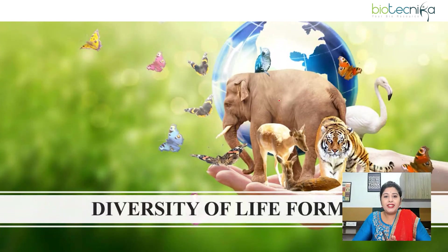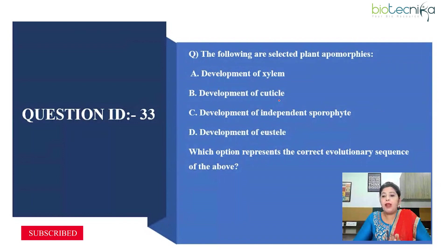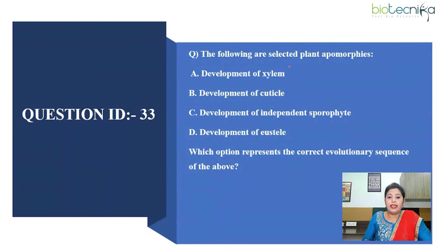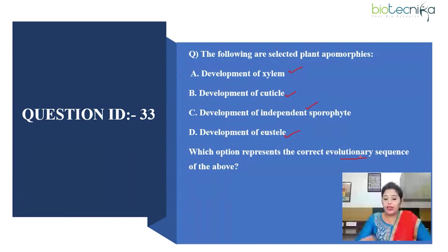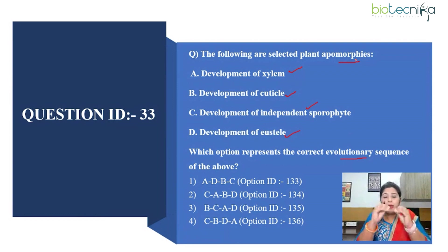So let's have a look at the questions asked in this exam. Starting with the first question: the following are selected plant apomorphies — development of xylem, development of cuticle, development of independent sporophyte, development of eustele. Which option represents the correct evolutionary sequence? To answer this question, you must be familiar with the term apomorphie, as well as thorough with plant classification.